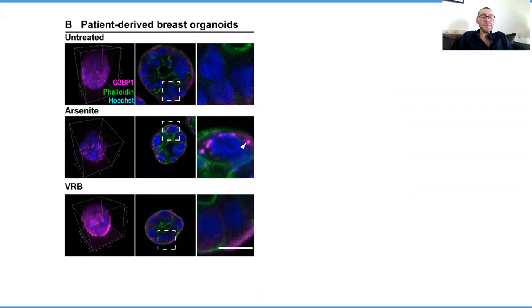Tissues have a 3D structure, which is very important to how they behave, so when we grow our organoids, we use scaffolding and give it a 3D matrix so that these cells, these organoids, will behave much more like tissues in the body.